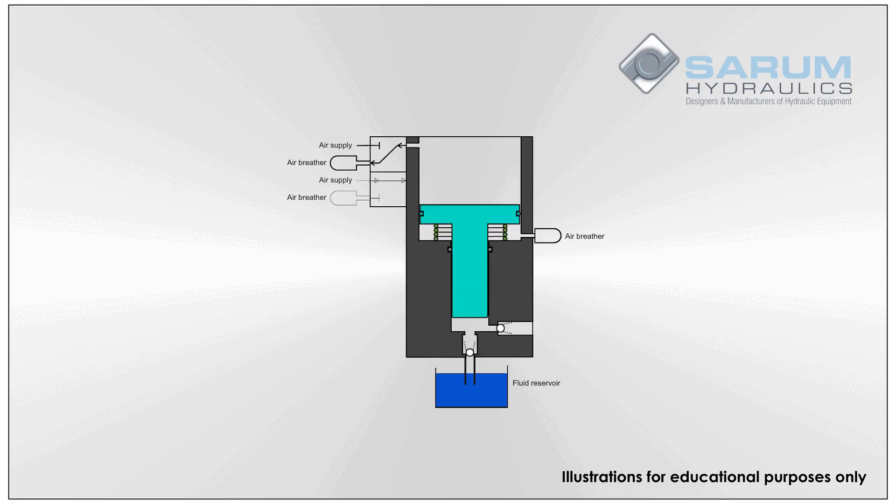This means that with the same 7 bar of air pressure, you can get a much larger hydraulic output, albeit at a slower rate.